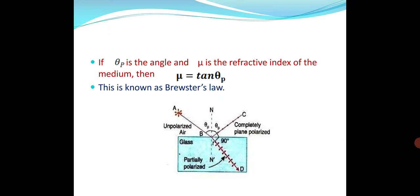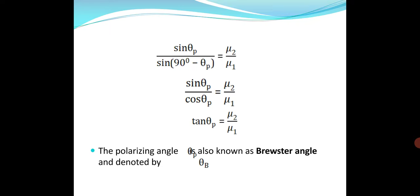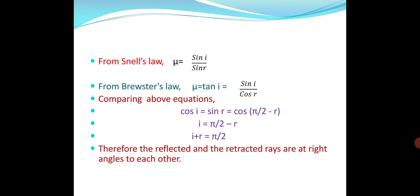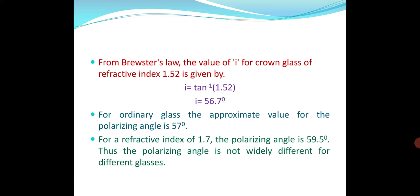The refractive index is equal to the tangent of the angle of incidence. tan(i) equals the ratio of the two refractive indices. From Snell's law, the sine of angle of incidence over sine of angle of refraction equals the refractive index. Combining with Brewster's law — tan(i) equals refractive index — we can derive that i + r = π/2. Therefore, the reflected and refracted rays are at right angles to each other. This is Brewster's law.